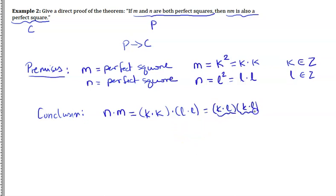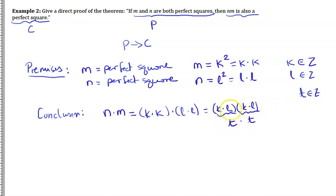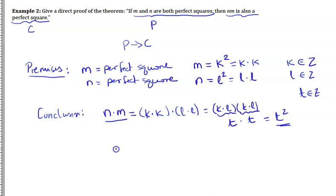KL is an integer, so let's call it T. Then we have T times T, which is T squared. Multiplying two integers together gives an integer, so T is an integer, and T squared means the product N times M can be written as an integer squared — so NM is a perfect square. That concludes the proof.